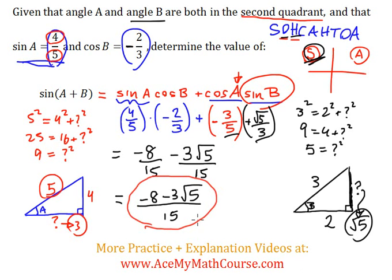And you could plug it into the calculator too to figure out what this really is. I think it's going to be approximately, just one quick second. Negative 8 minus 3 root 5 divided by 15 is approximately negative 0.9805. And that's it.